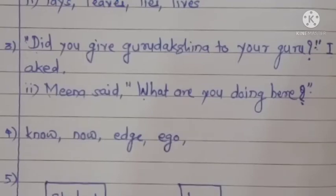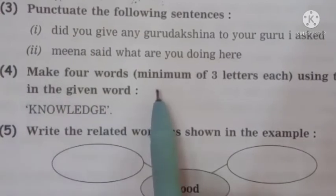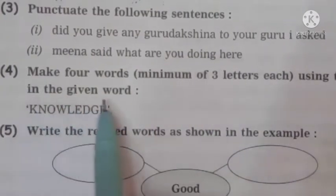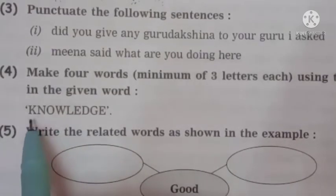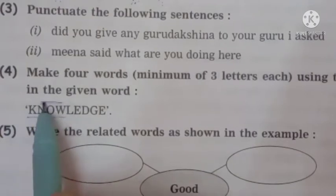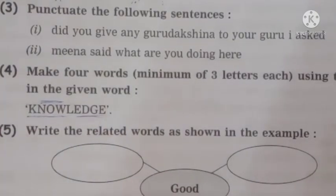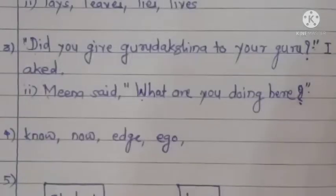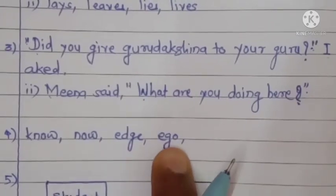Now look at this activity — make four words, minimum of three letters, using the letters in the given word. The word given is 'knowledge'. If you pay attention to the letters, you can form words like: know, nod, no, nod, edge, age, ego, and also: know, age, ego. So friends, there are several three-letter and four-letter words you can make from 'knowledge'.